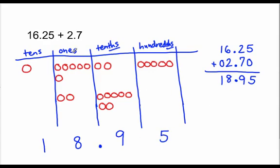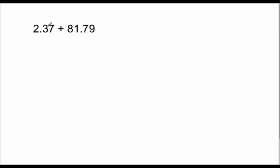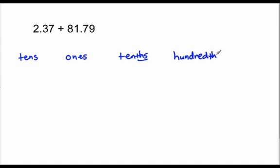Let's do a different problem using the same idea: two and thirty-seven hundredths plus eighty-one and seventy-nine hundredths. The highest place value in any of these numbers is the tens place, and the lowest place value is the hundredths place. So I'm going to start from the tens place and work my way down to the hundredths place — tens, ones, tenths, and hundredths.